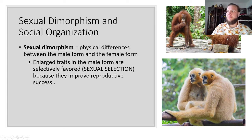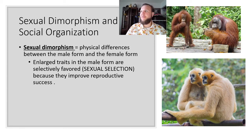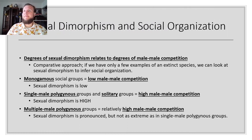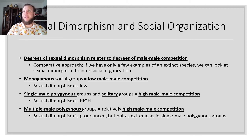This is important because of sexual dimorphism. We see relatively high sexual dimorphism in orangutans and low sexual dimorphism in gibbons — the physical difference between males and females. Large traits are selectively favored because of sexual selection. Degrees of sexual dimorphism relate to degrees of male-to-male competition: the more sexually dimorphic a species is, the more male-to-male competition there is. Monogamous groups like gibbons have low male-to-male competition, so sexual dimorphism is very low — sometimes just a coloration difference. Single male polygynous and solitary groups have high male-to-male competition, so sexual dimorphism is high.